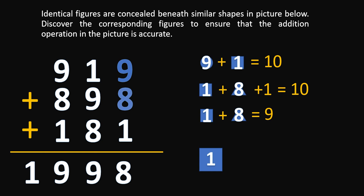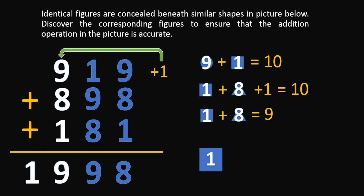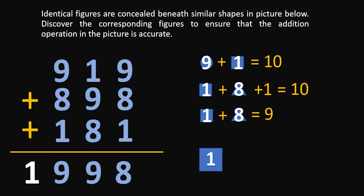9 plus 8 is 17 — so that's 8, carry plus 1 into column number 2. 1 plus 1 is 2, plus 9 is 11, plus 8 is 19 — so that's 9, carry plus 1 into the third column. 1 plus 9 is 10, plus 8 is 18, plus 1 is 19 — so that's 9, and we carry plus 1 into the fourth column. Since we carry plus 1 into the fourth column, this is the correct solution. Our square equals 1, our triangle equals 8, and our circle equals 9. This is the answer to our problem.